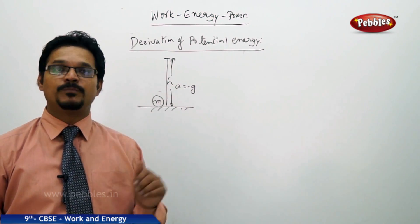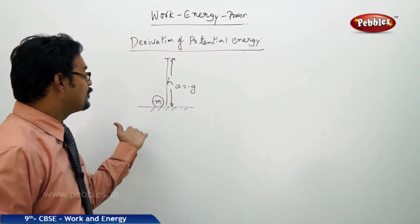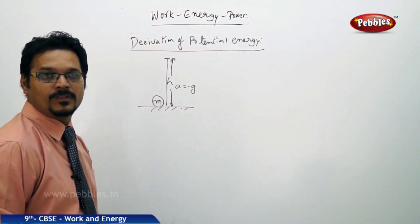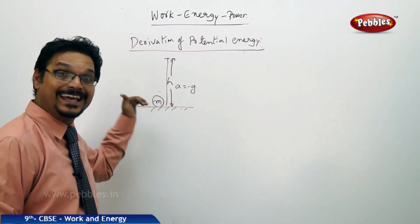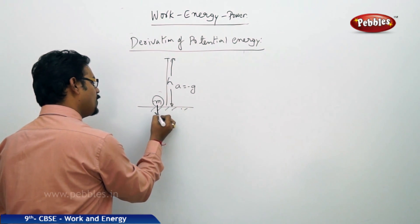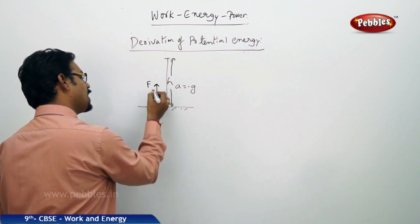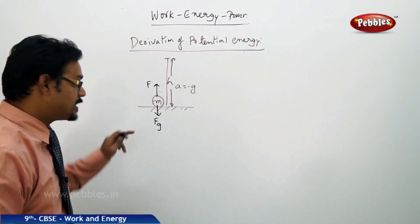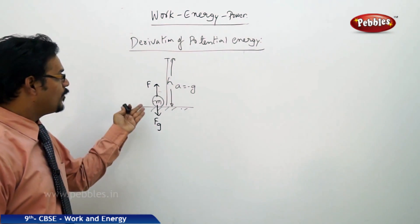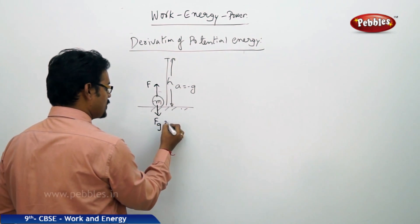Now we are going to derive the potential energy. There is a body of mass m which is pulled up or thrown up against the gravity to a height h. So the gravity is acting downwards with g, but we are applying the same amount of force upward to make the body move to the height h.